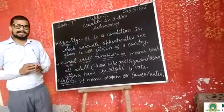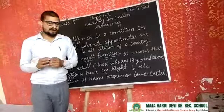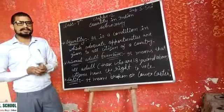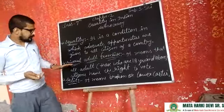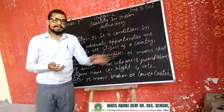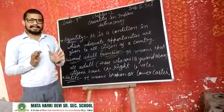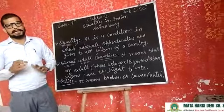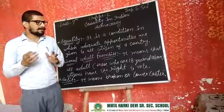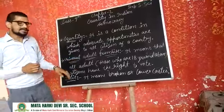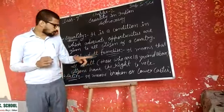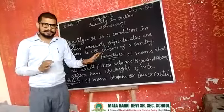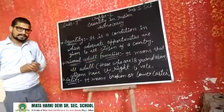The next part is universal adult franchise. It is a right given to all citizens in India. All adults — those who are 18 years of age and above — have the right to vote. That is the concept of universal adult franchise.